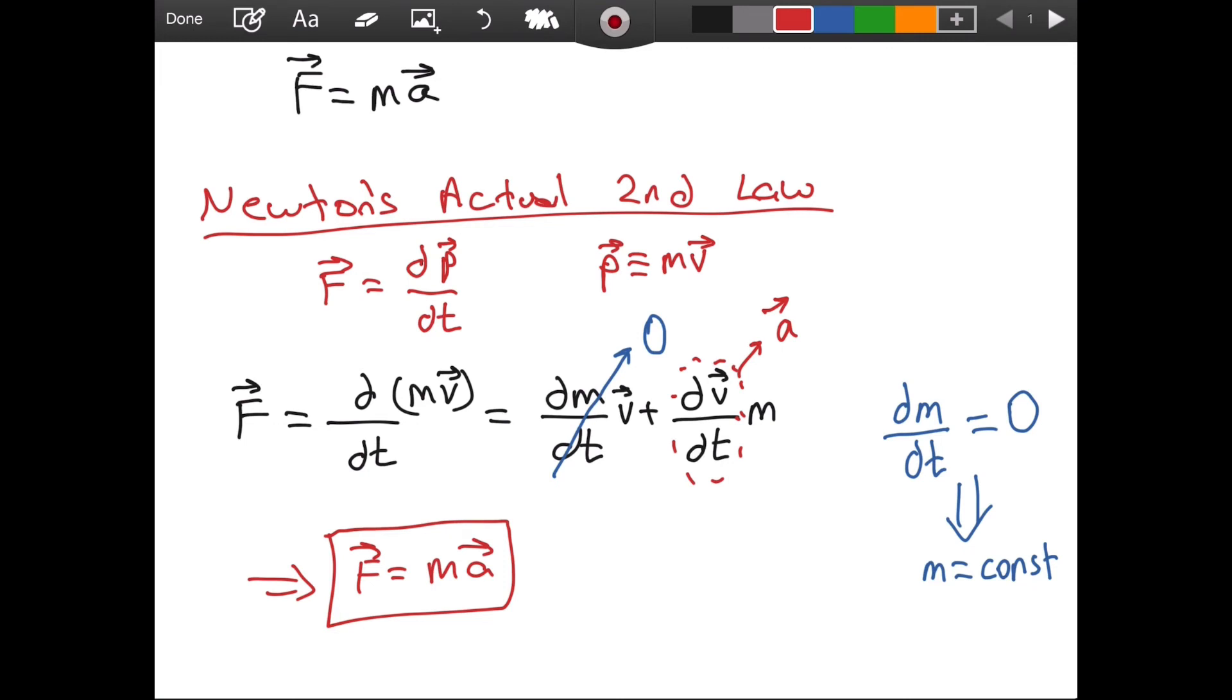We proved a special case of Newton's second law using Newton's actual second law. You might be wondering where we would need the actual law. Where would we need this derivative definition? Well, if you are dealing with a rocket, your mass will be changing because as the fuel is shooting out of our rocket, its mass will change. So dm over dt will not be constant.